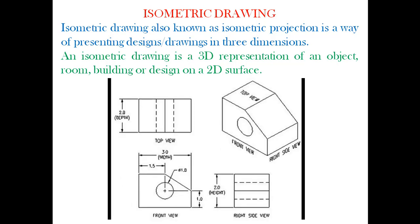So an isometric drawing is represented on a two-dimensional surface. Looking at the drawing on screen, the top view, front view, and right side view are in 2D — representing just the length and breadth. But the drawing at the top right, which is in three dimensions, makes more sense because it is in a pictorial form.